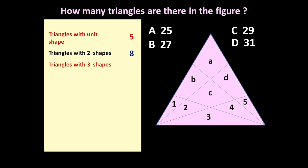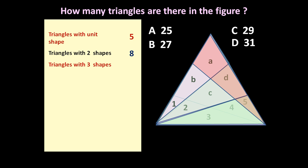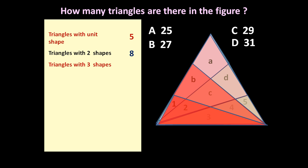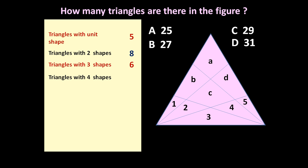Now let us remove that and count triangles which can be formed using three different shapes. If you see — one, two, three, four, five, six. So total six such triangles can be formed using three different unit shapes.